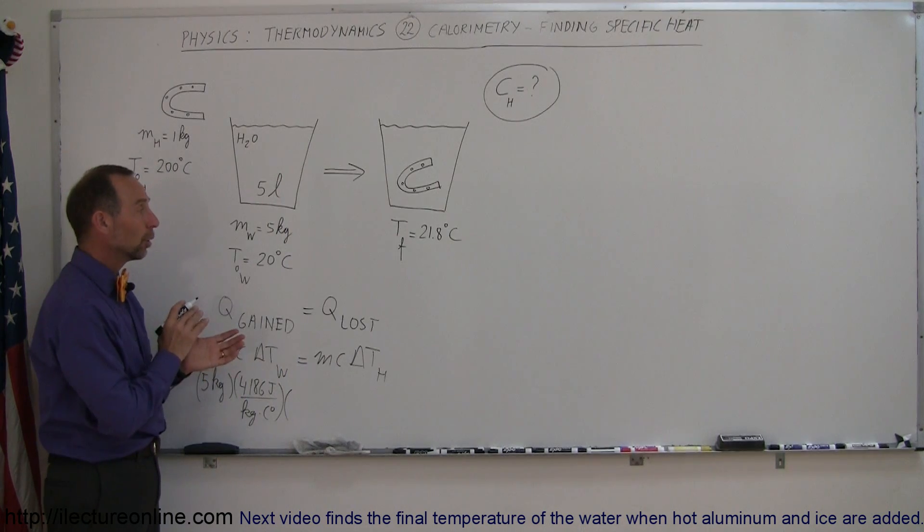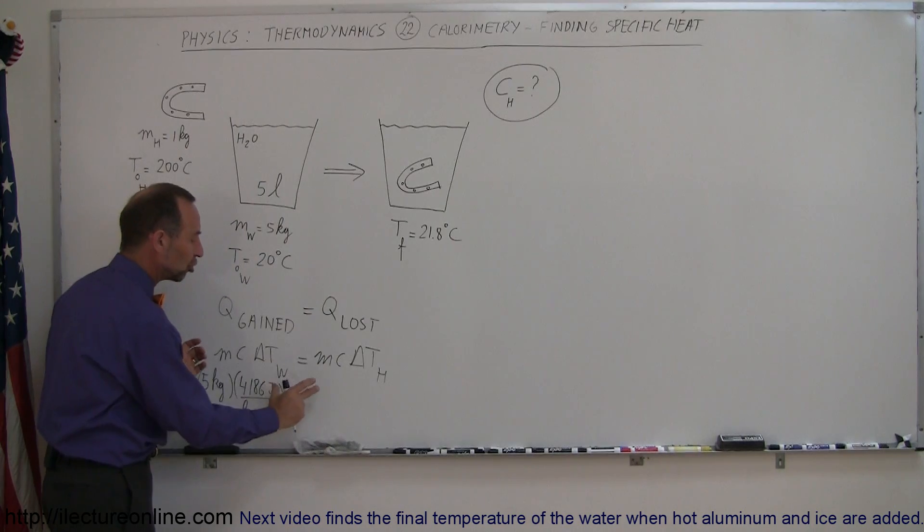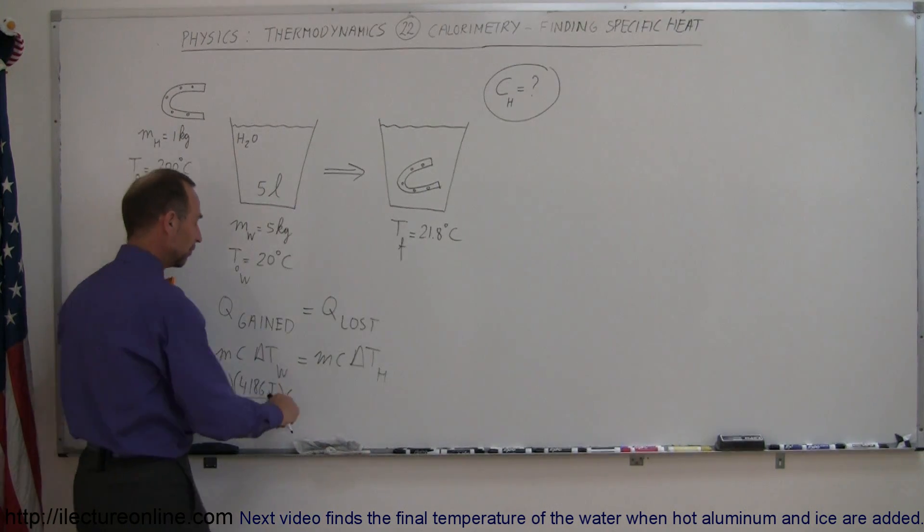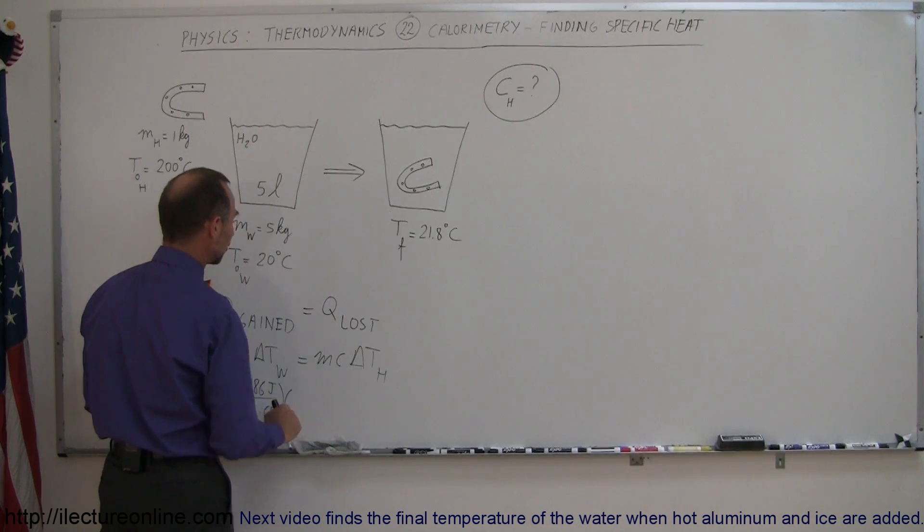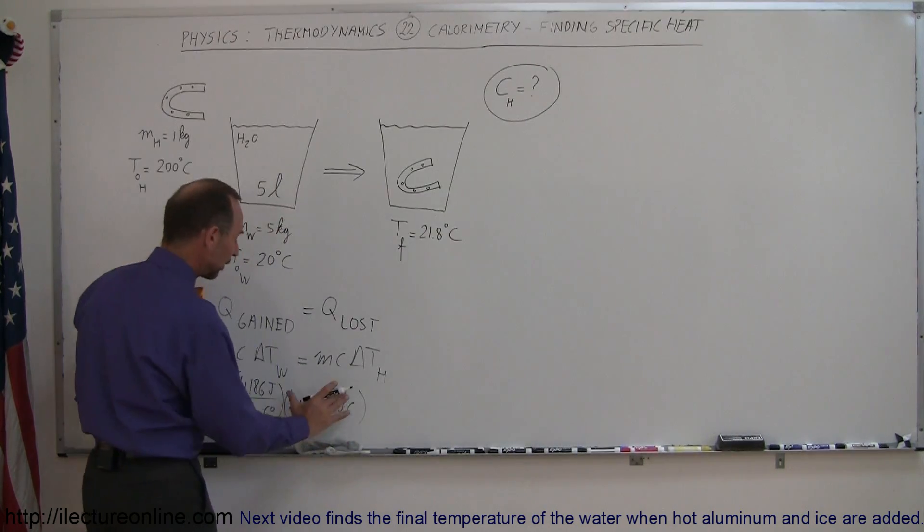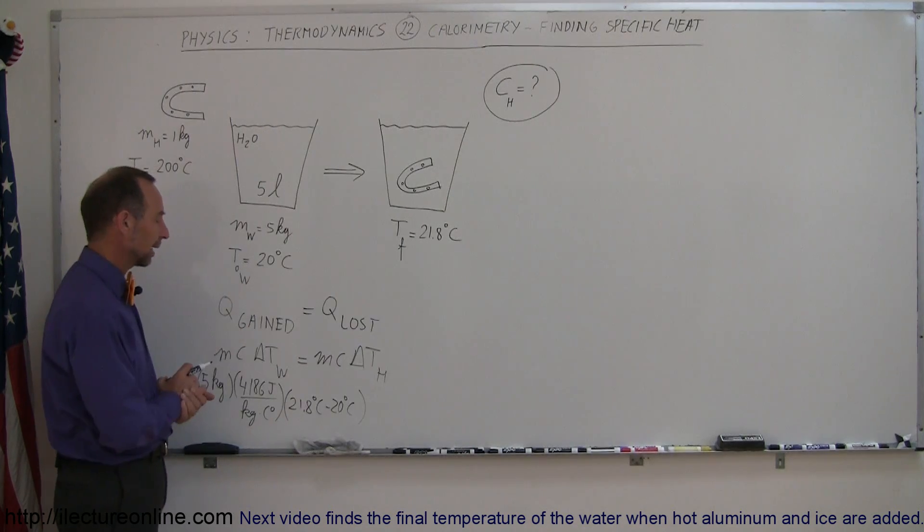It doesn't matter which way it goes. It could be that the water is cooler at the end or warmer at the end. You just want the change in the temperature, and you want that always to be a positive value. So you put the final temperature minus the initial temperature in this case. So that would be 21.8 degrees centigrade minus 20 degrees centigrade. So you always want this to be a positive quantity, and the science will work out if you do it like this.